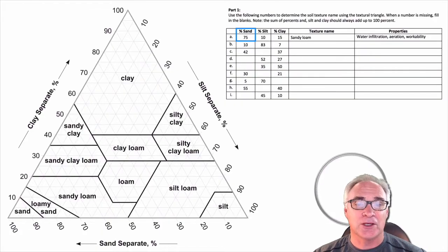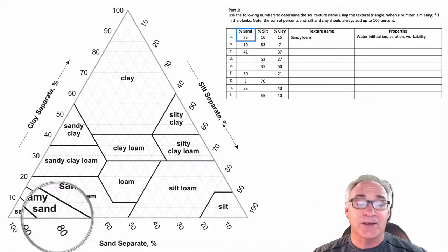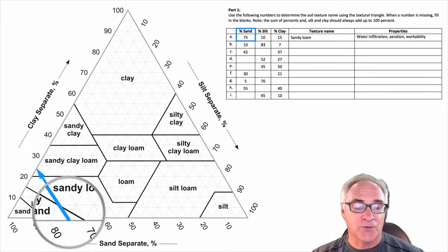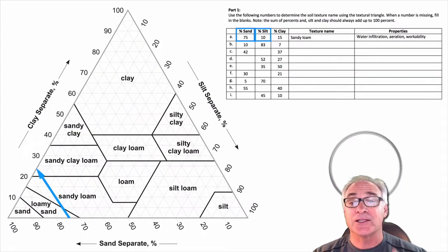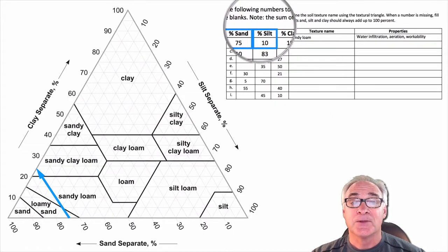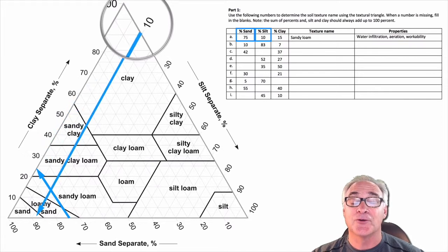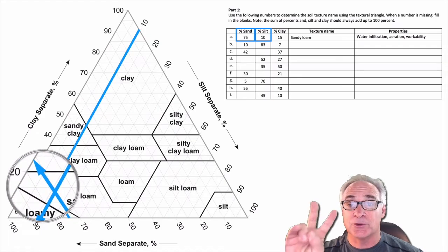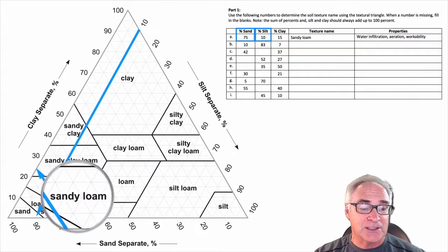So let's go ahead and draw our first line, starting at the sand at 75% — between 70 and 80%. We draw that line from 75 all the way to the other side, which is clay. Now we're going to take a look at the silt side. The silt is at 10%, so we bring in the line and draw it right there. We now have the intersection of those two lines — sand and silt — intersecting at the line that says sandy loam.